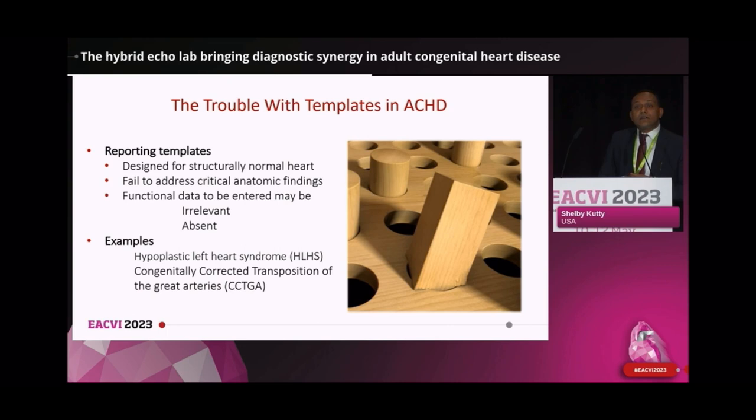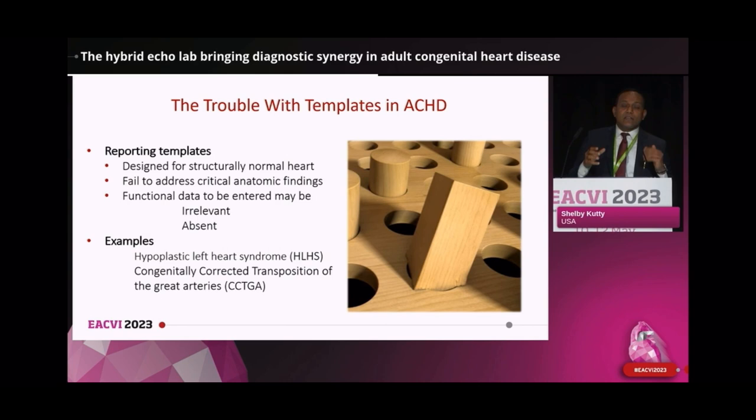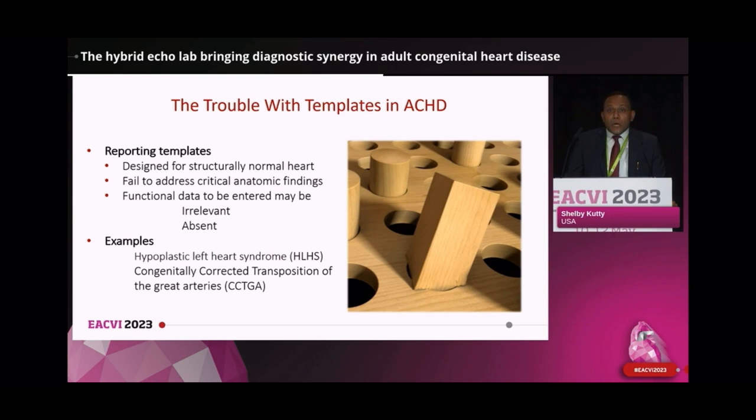The trouble with templates in ACHD is akin to the classic square peg, round hole problem. We find ourselves trying to fit the square peg of complex, surgically modified congenital heart disease into the round hole of templated reporting designed around the structurally normal heart. The report format does not allow convenient reporting of critical anatomic findings, and also functional data that we know doesn't make sense because of the peculiar anatomic configuration. I illustrate this with two examples: hypoplastic left heart syndrome and congenitally corrected transposition of the great arteries.